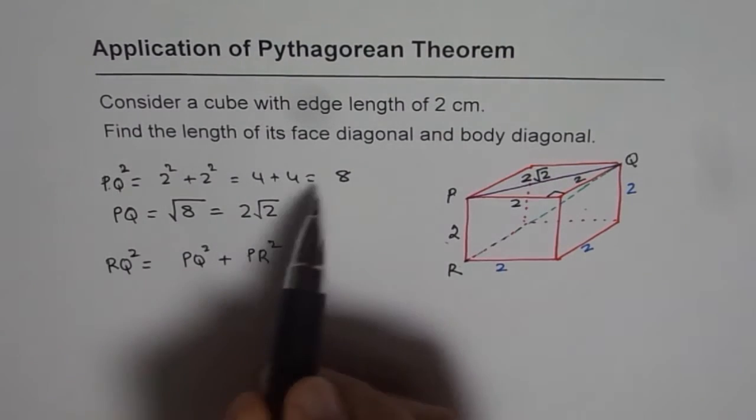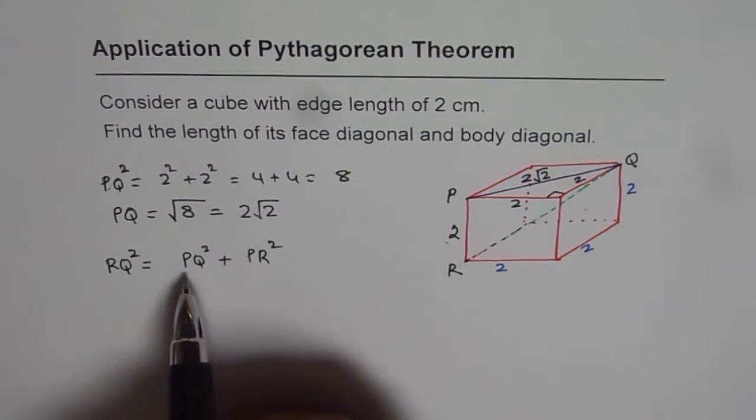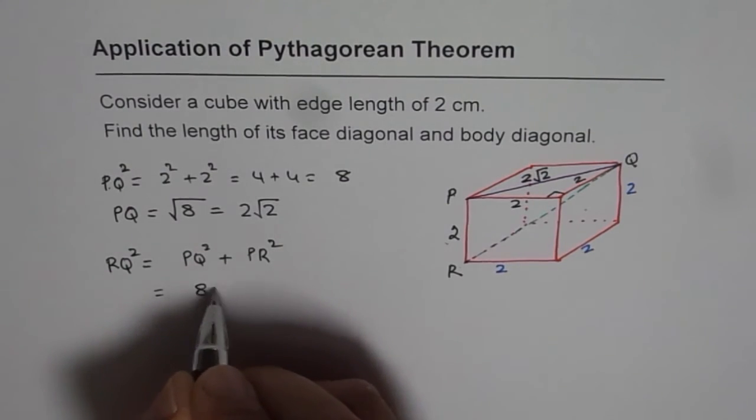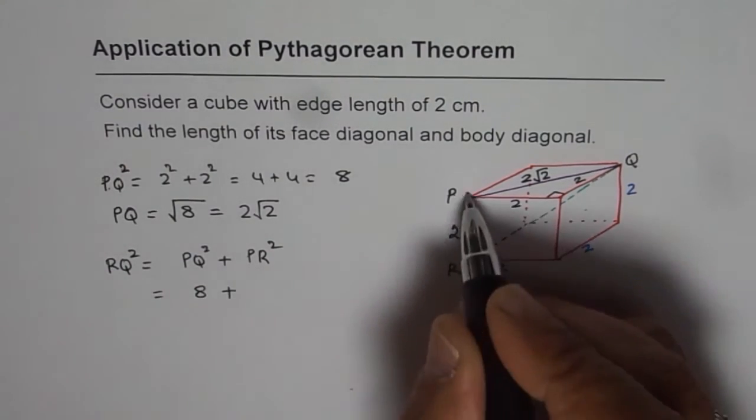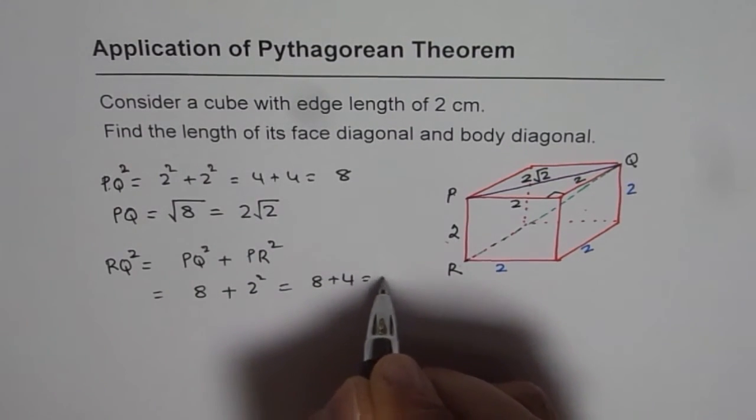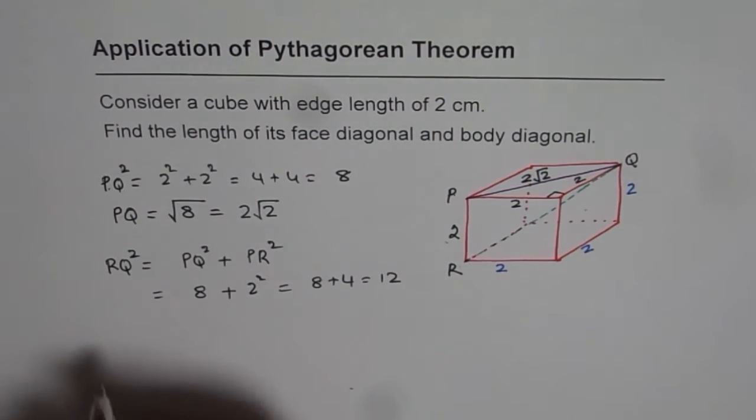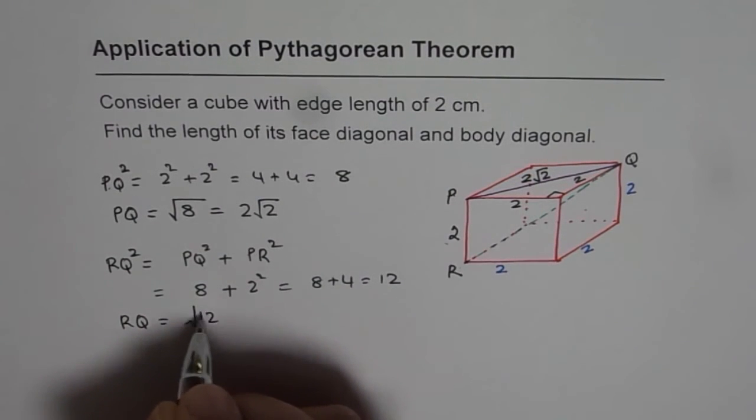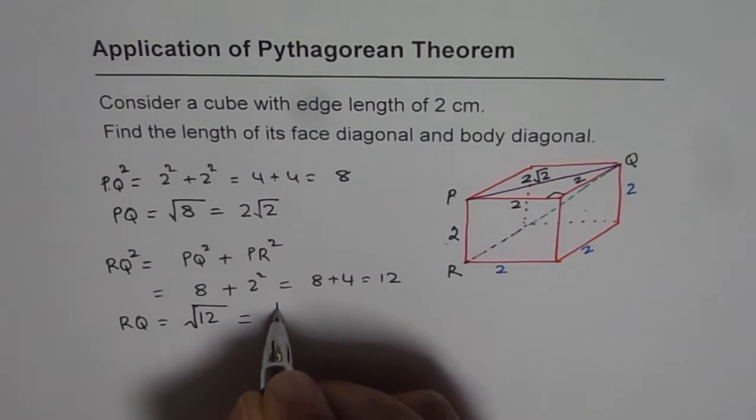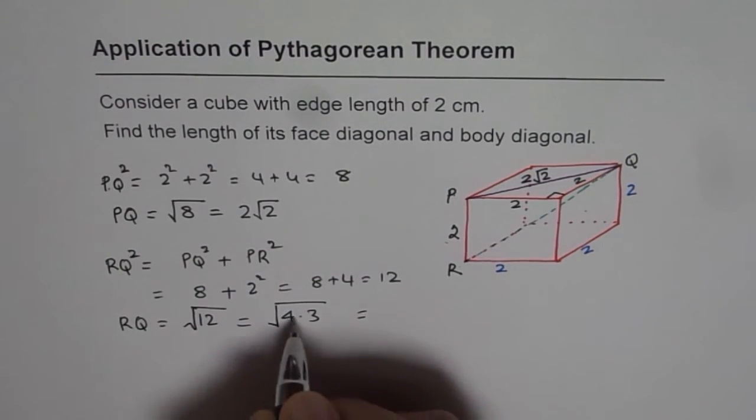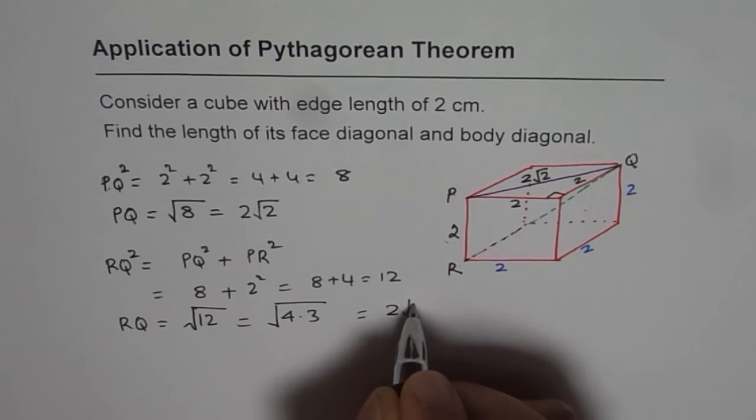We know PQ square is 8. We could put 8 here directly. That is better. So that gives us 8 plus PR square is 2 square, that is 8 plus 4 which is 12. So RQ is equal to square root of 12. Now square root of 12 could be written as 4 times 3 and 4 is 2. We get 2 square root of 3.